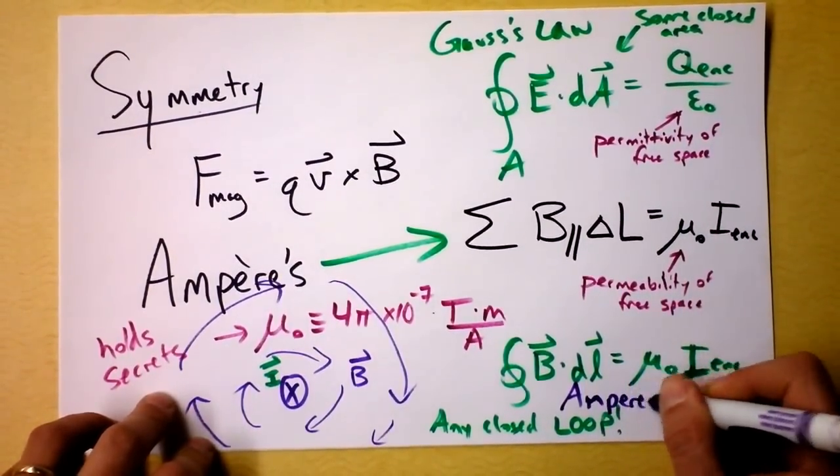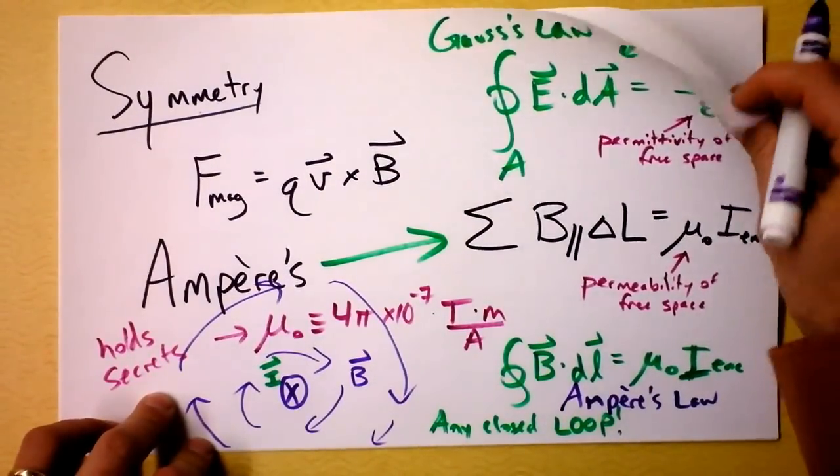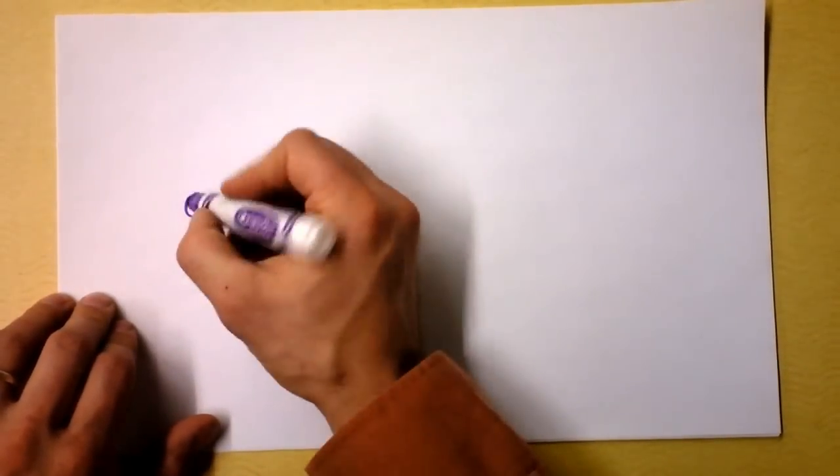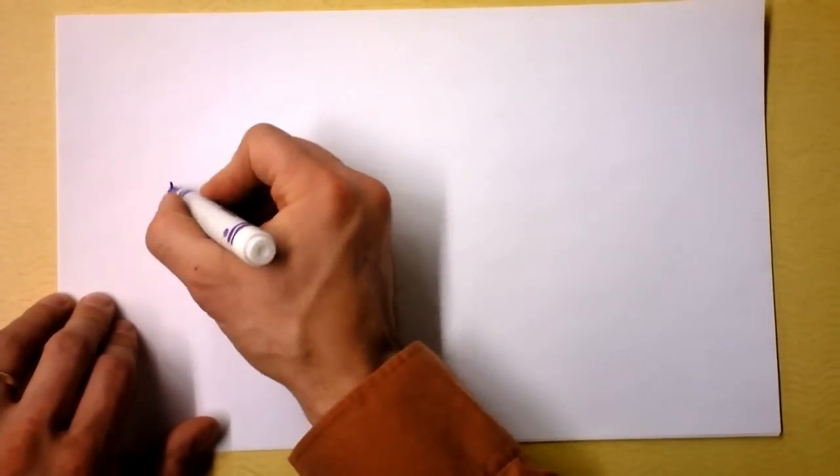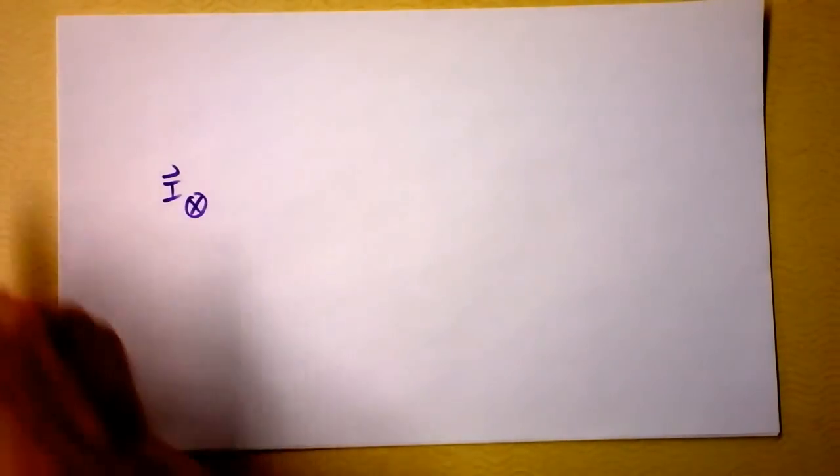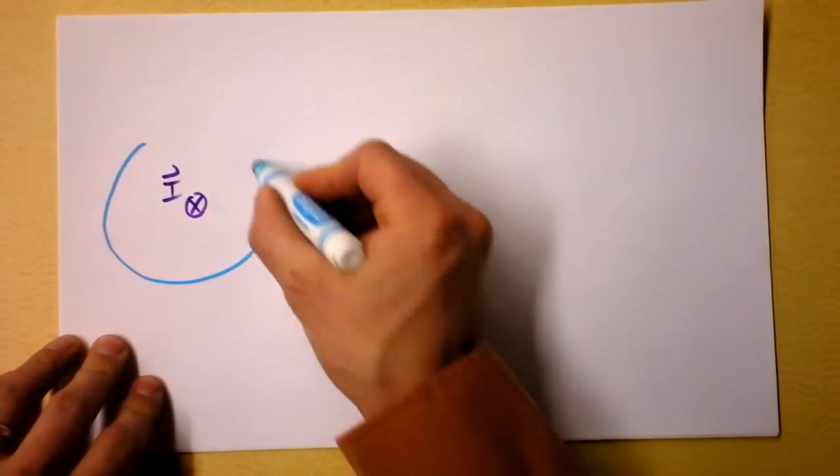Let's do Ampere's law for, let's label this again, so you don't get them confused, Ampere's law for a current-carrying wire. Just one wire. And this will help me to know how big the magnetic field is around that wire at all locations. So there's I, and I'm going to make an Ampereian loop here in blue.